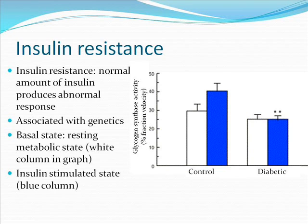This slide shows a graph from the research paper which describes the activity of glycogen synthase in 10 controls and 10 obese type 2 diabetic subjects. The 10 controls were healthy subjects that did not have diabetes. Activity was measured by carrying out a biopsy of skeletal muscle taken from in vivo stimulation with insulin. The white column shows the basal state, which is the resting metabolic state, and the blue column shows the insulin-stimulated state. From the graph, it can be seen that the obese type 2 diabetic subjects had lower glycogen synthase activity than the control subjects, showing that insulin resistance in type 2 diabetes has an effect on glycogen synthase activity.